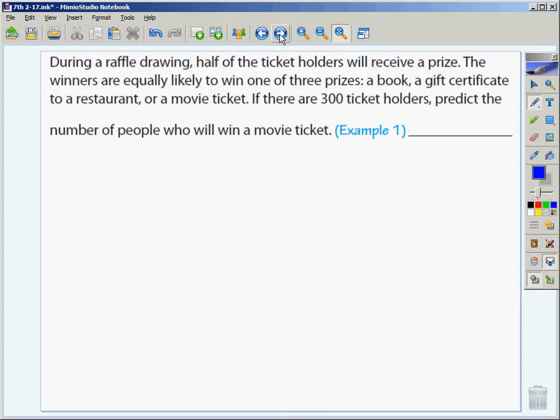During the raffle drawing, half of the ticket holders will receive a prize. What's the probability of winning any prize so far? 50%, half the people. The winners are equally likely to win one of three prizes. A book, a gift certificate to a restaurant, or a movie ticket. If there are 300 ticket holders, predict the number of people that will win a movie ticket. If the probability of winning anything is a half, what's the probability of getting a movie ticket? Just a movie ticket. One-third. When you have a compound event, you can multiply the probabilities together. One-half times one-third would be one-sixth.